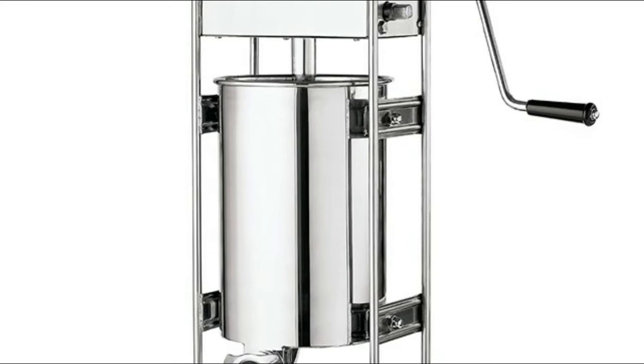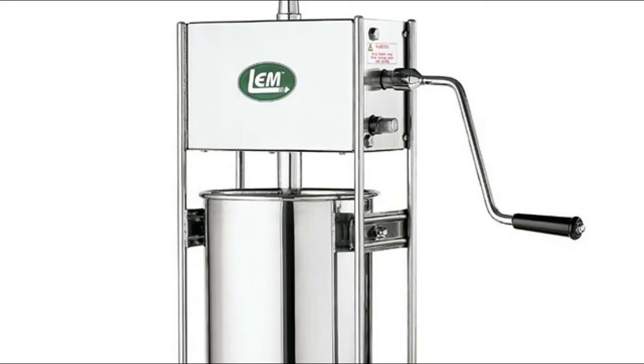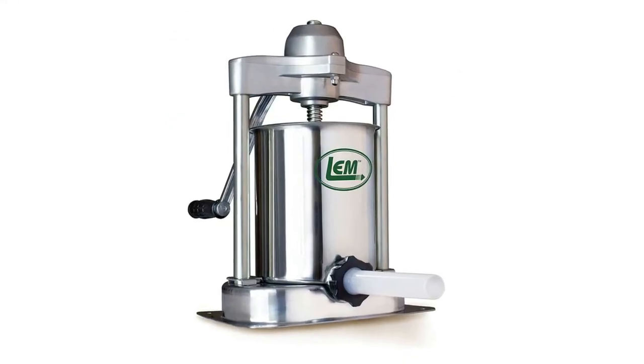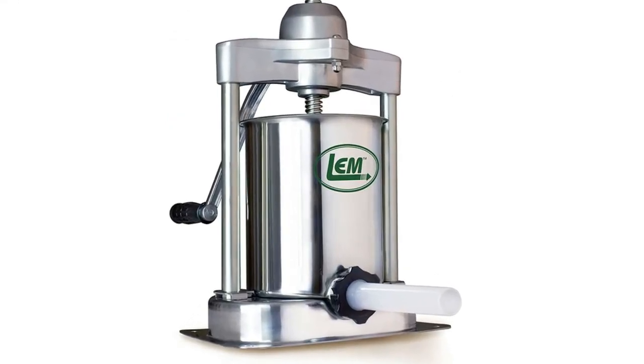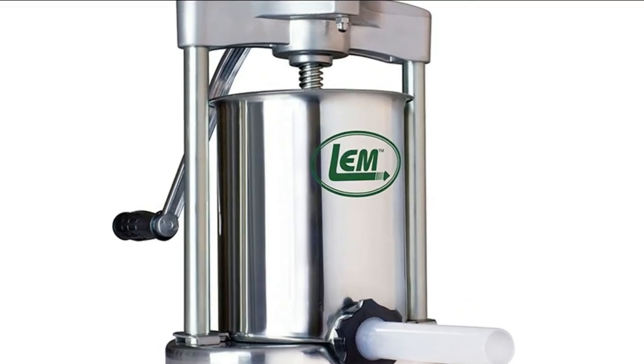Covering parts and labor, LEM Products makes home meat processing easy. We deliver high quality meat processing equipment, meat grinders, jerky making equipment, and vacuum sealers along with the needed supplies for the hunter and home meat processor.